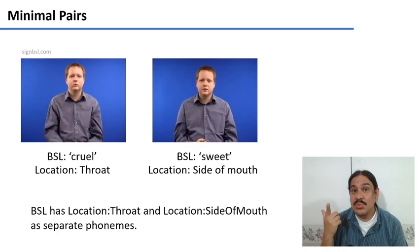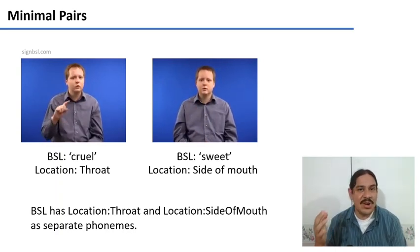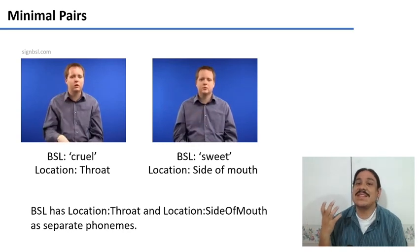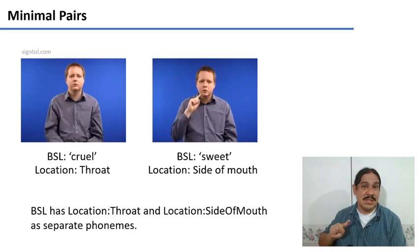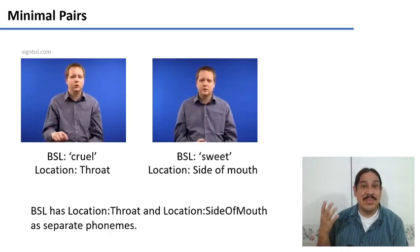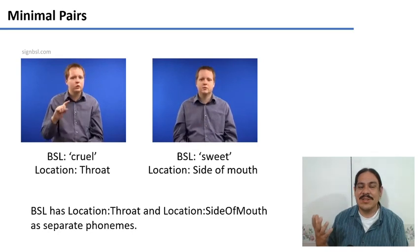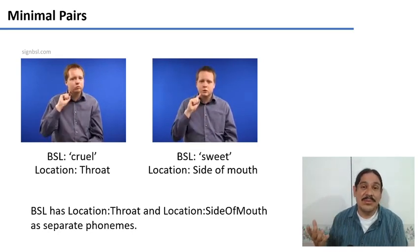And because these two words are minimal pairs, we also know that those two locations are phonemes because they are the thing that's helping us distinguish between the meaning cruel and the meaning sweet. So sign languages have minimal pairs where the signs differ in only one of their components, and that component would be a phoneme.